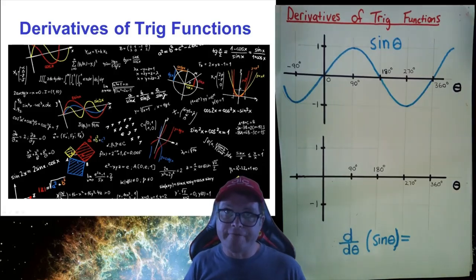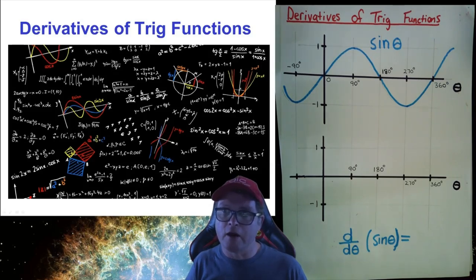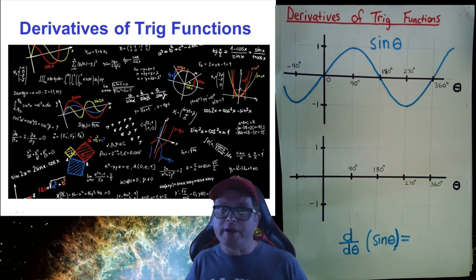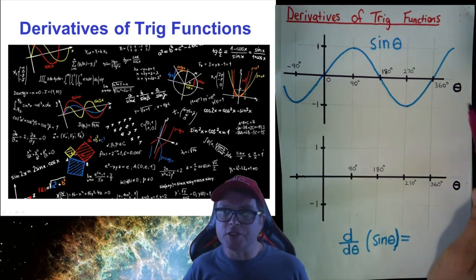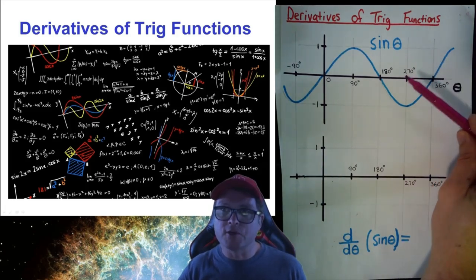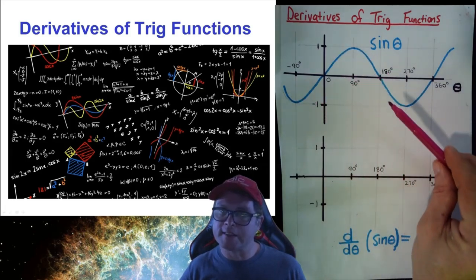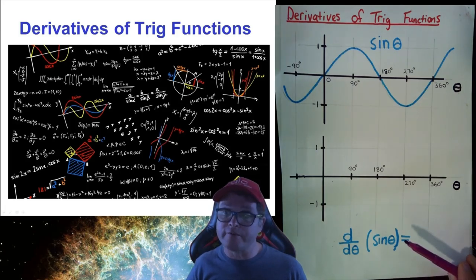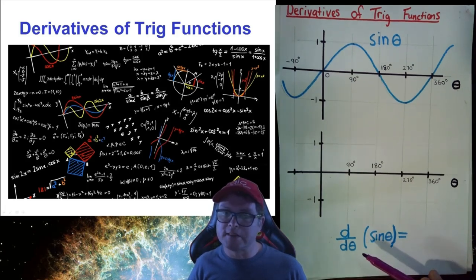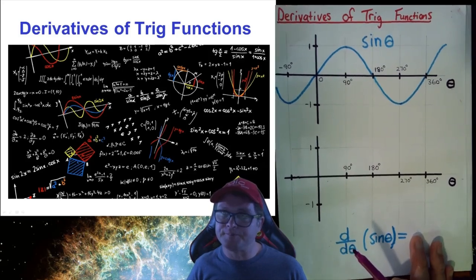In physics, we often make use of trigonometric functions — sine and cosine. What we need to know is how to differentiate trigonometric functions. We're going to approach this in a very intuitive way and figure out what the derivative should be. The first function we're going to look at is sine of theta.